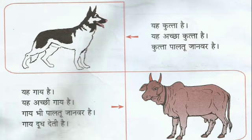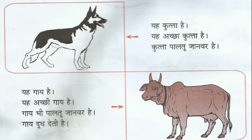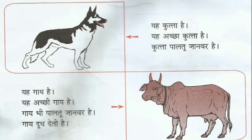See this picture — it's a dog. In Hindi, dog is Kutta. Kutta Hai — this is a dog. Achcha Kutta Hai — this is a good dog. Kutta Paaltu Janvar Hai — a dog is a domestic animal. Listen here: Yeh means this, but Voh means he, she, or that. Yeh has the meaning: he, she, this. Voh also has four meanings: he, she, eat, that.